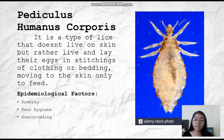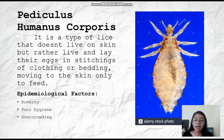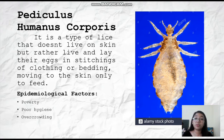As the body lice lay their eggs in clothing, the nymph is an immature louse which, except for its smaller size, has the same appearance as the adult. The adult body louse is similar to the head louse — grayish or white in color — but its average length is 2.5 to 3.5 mm. It also has no wings and is flat in shape.